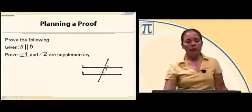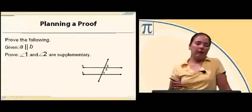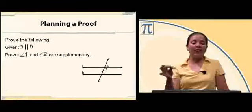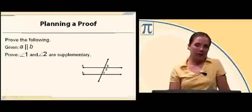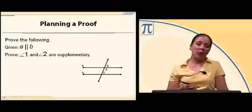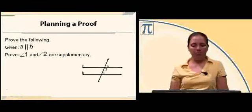Okay, we're going to prove that line A is parallel to line B. I'm sorry—given line A is parallel to line B, we're going to prove that angle 1 and angle 2 are supplementary.